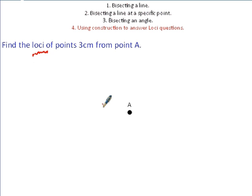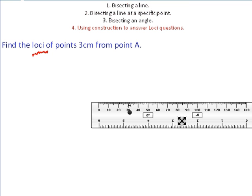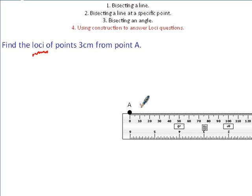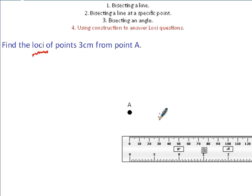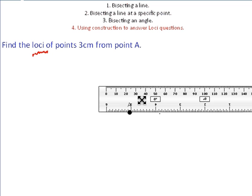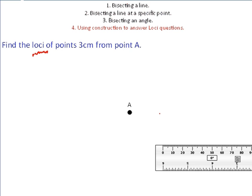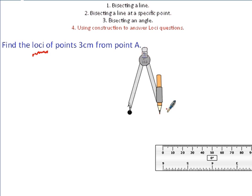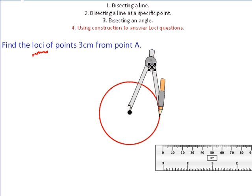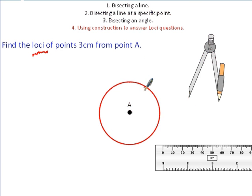First, get a ruler. We know there are 30 millimetres in 3 centimetres. If I put a dot there, that would be one point 3 centimetres away from A. However, we want every single point all the way around. So instead of measuring with the ruler the whole way round, grab your compass, open it to 3 centimetres, and then we can just draw a circle which satisfies that condition. The resulting line is the loci of the points 3 centimetres away from A.